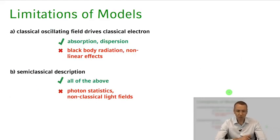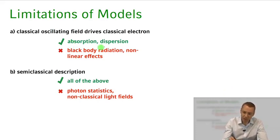Just to get a brief overview of what you can expect, what phenomena we can describe within the different models. The classical model, the purely classical model, already allows us to describe for example absorption and dispersion. But we can't describe effects like black body radiation or nonlinear effects in the atom.